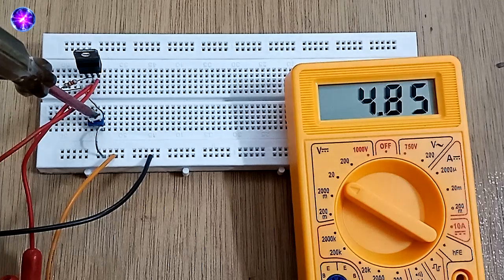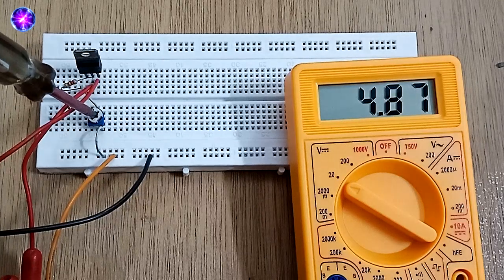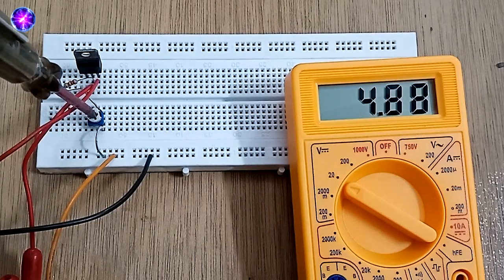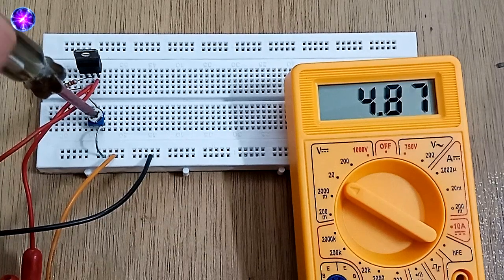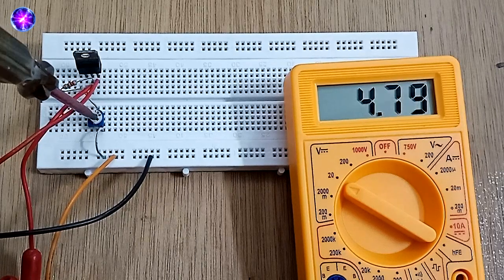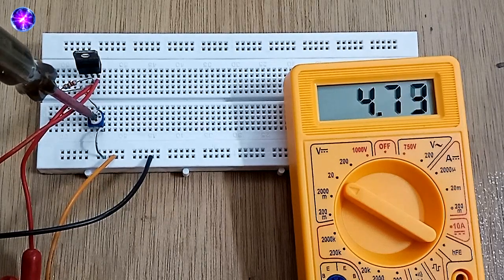After connections are done, we can start checking the voltage output by rotating the center wiper terminal with the help of screwdriver clockwise or anti-clockwise for reducing or increasing voltage or giving any fixed voltage value.